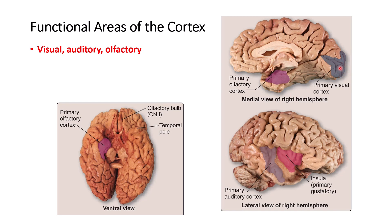There are other visual cortices as well. The primary visual cortex is in the occipital area and is responsible for vision. The auditory cortex is in the temporal lobe — you have the primary auditory cortex and also auditory association areas. Any sound you hear is processed in this area.